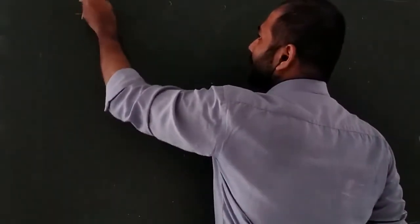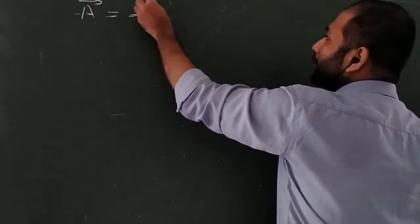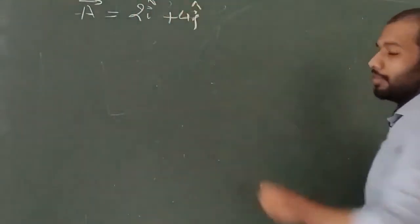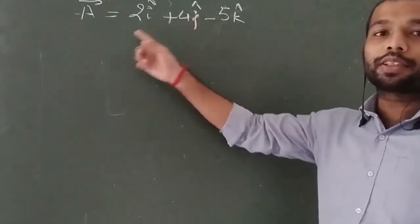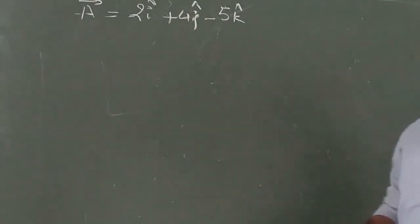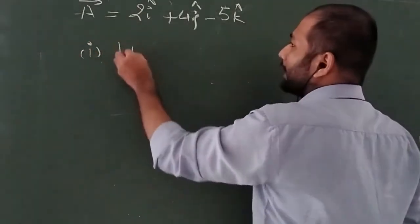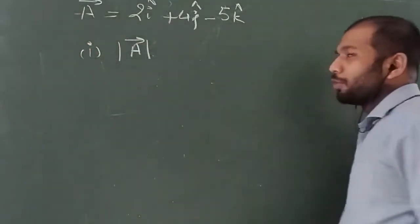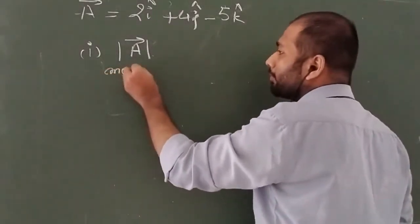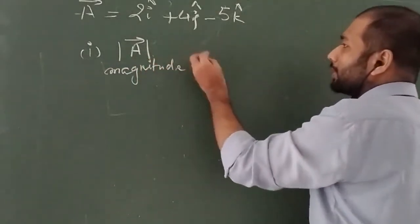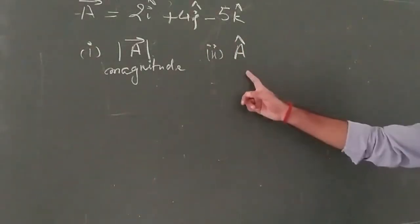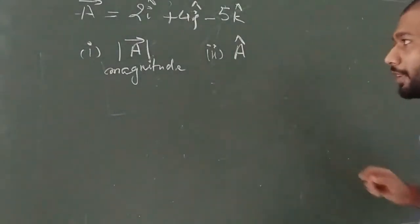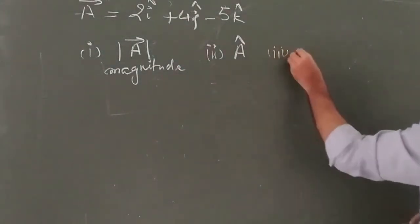The first question: vector A is given as 2î + 4ĵ - 5k̂. This is the rectangular form of vector A. We have to find three things: first, the magnitude mod of A; second, the unit vector of A representing the direction of vector A; and third, the direction cosines.